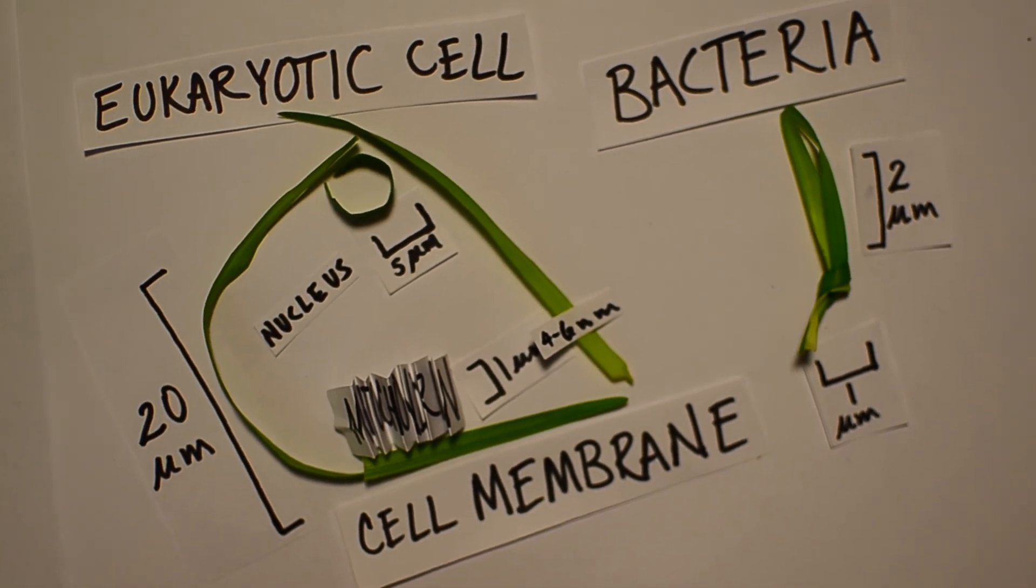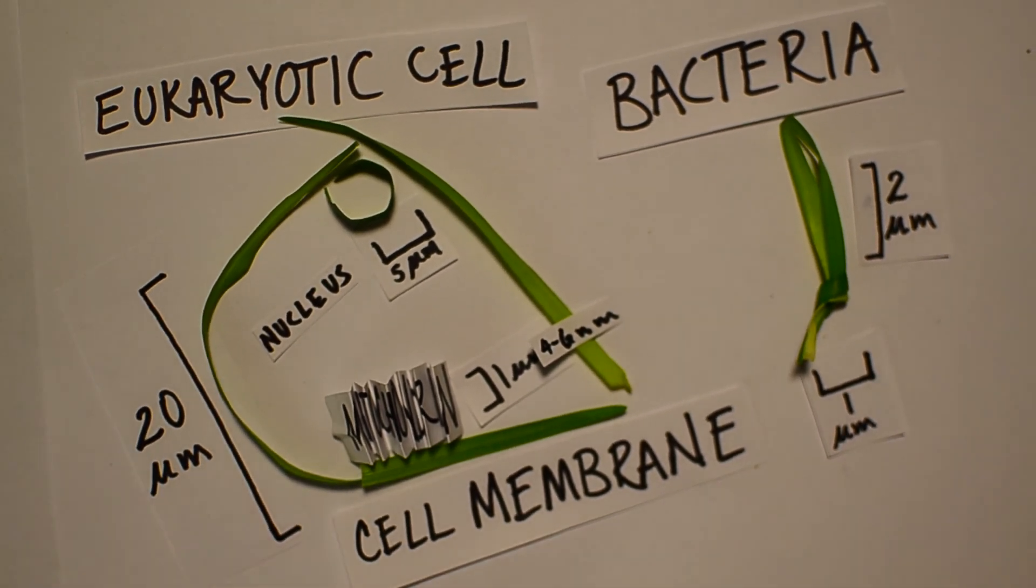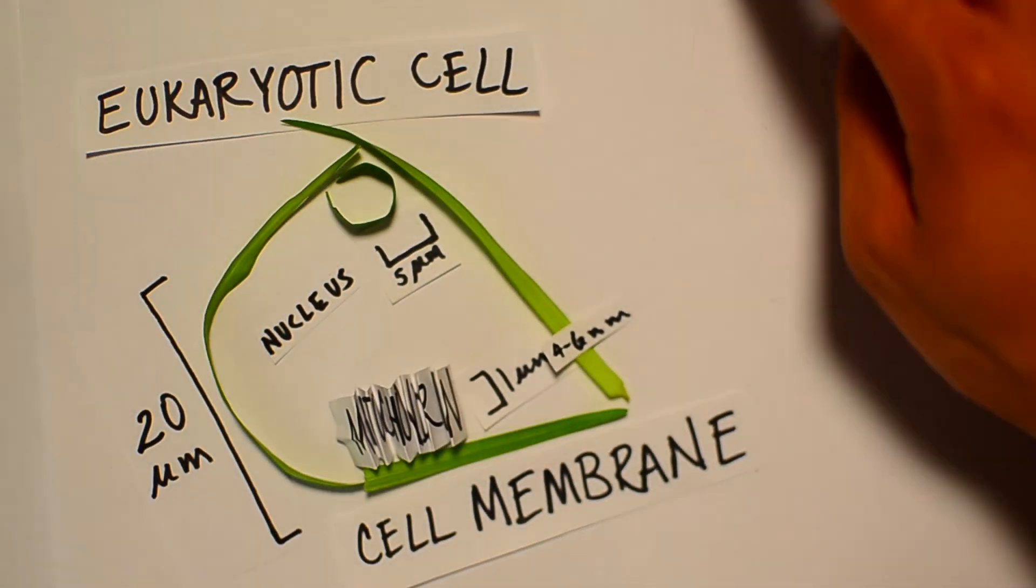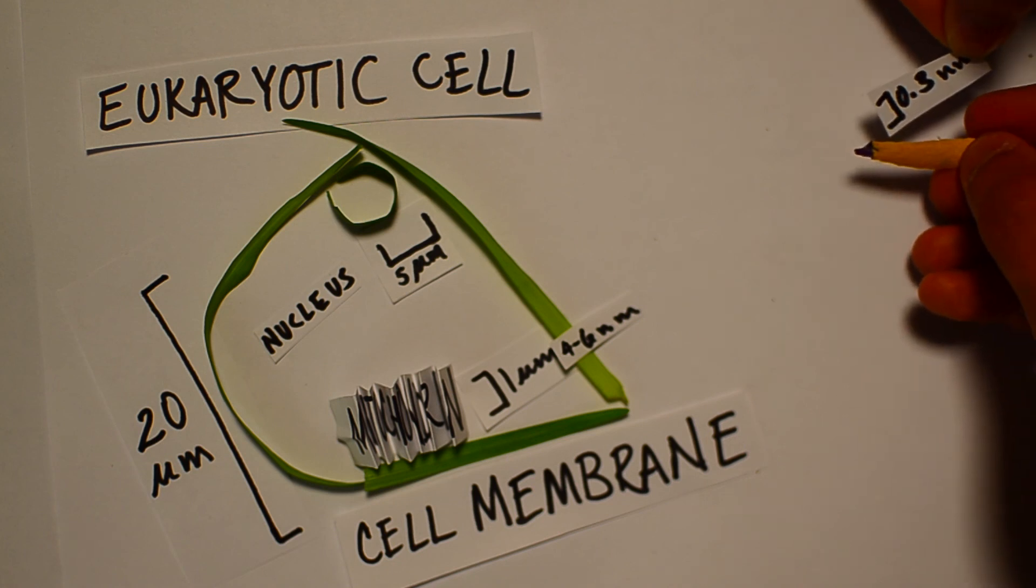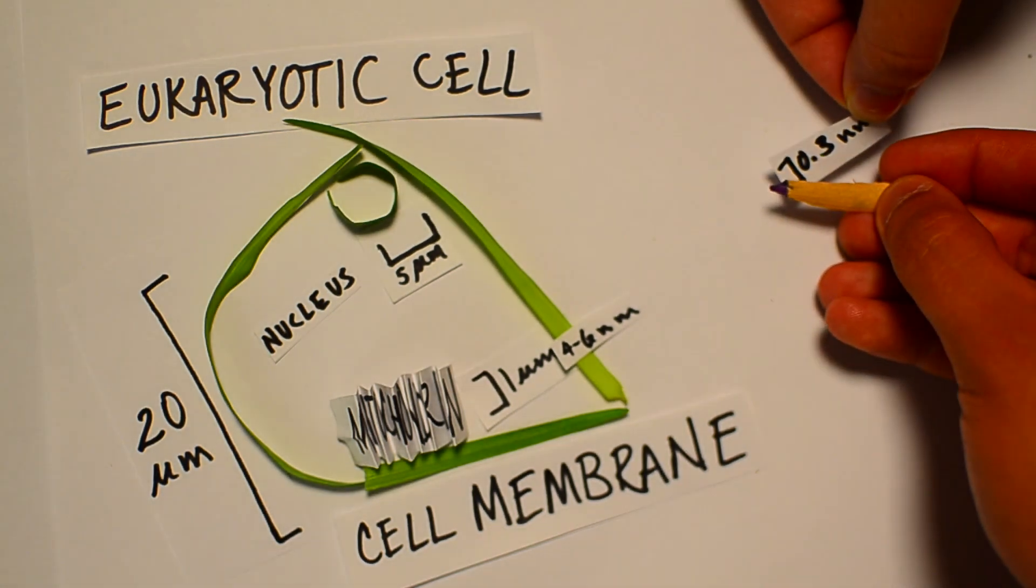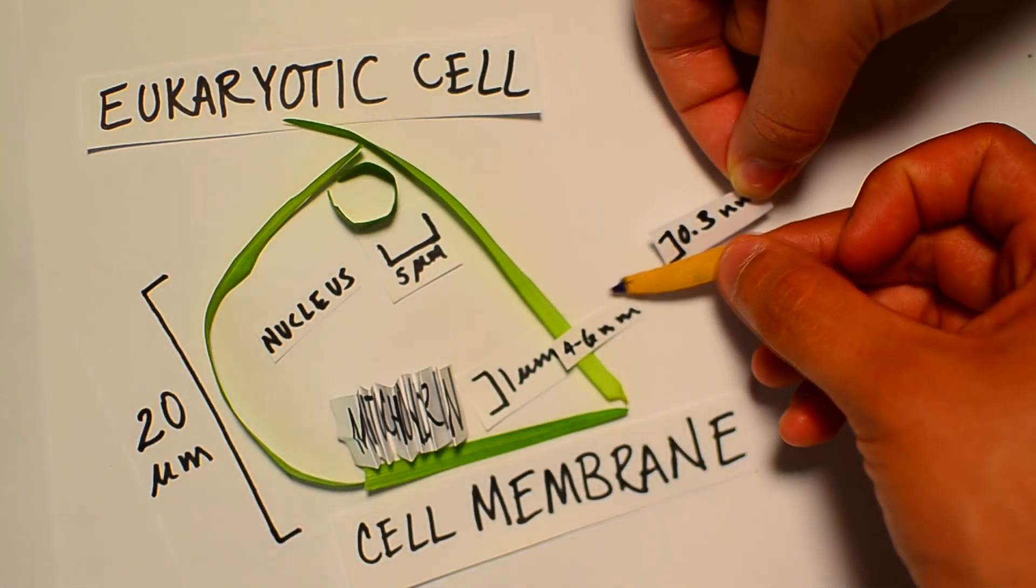Water is essential to the function of a cell. Now that we know the width of the phospholipid bilayer is about 4 to 6 nanometers, it's easy to see how water is easily able to pass through it as it is only about 3 tenths of a nanometer.